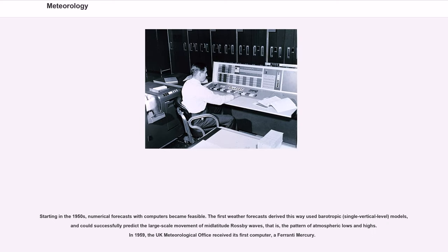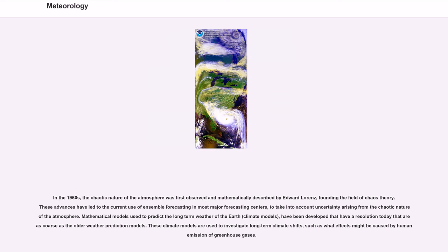Starting in the 1950s, numerical forecasts with computers became feasible. The first weather forecasts derived this way used barotropic models. In 1959, the UK Meteorological Office received its first computer, a Ferranti Mercury. In the 1960s, the chaotic nature of the atmosphere was first observed and mathematically described by Edward Lorenz, founding the field of chaos theory. These advances have led to the current use of ensemble forecasting in most major forecasting centers, to take into account uncertainty arising from the chaotic nature of the atmosphere.